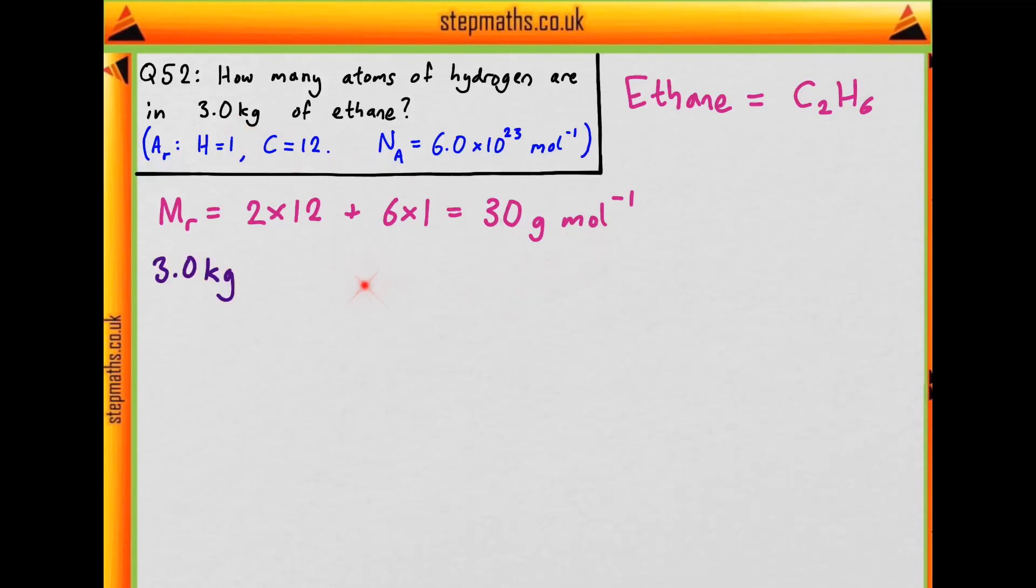So what's our mass? We're told that we have 3 kilograms, but our MR is in grams per mole, so let's convert it to grams. Times by 1,000 gives 3,000 grams. Now, how many moles do we have? The formula is number of moles is mass divided by MR. So let's put the numbers in for ethane: that's 3,000 grams over 30 grams per mole, which comes out as 100 moles.